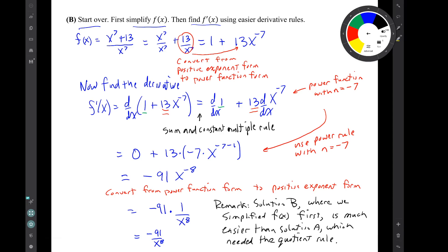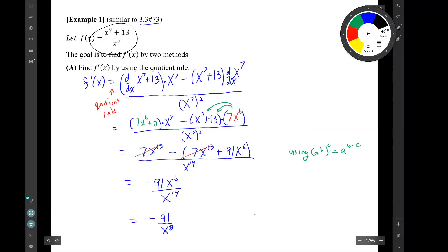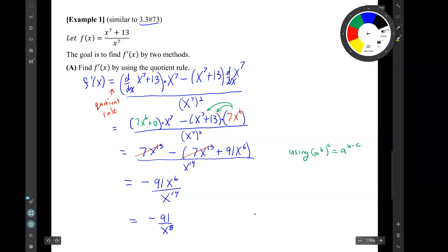So again, this function that looks like a quotient, you can find its derivative using the quotient rule, but it's hard. There is an easier way for this function that does not involve the quotient rule, and that's much better. Okay, that's the end of this example, and that's the end of the video. Thank you.